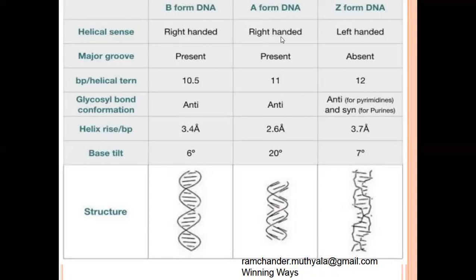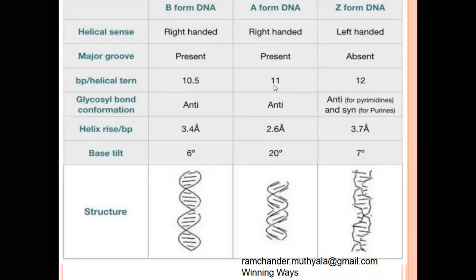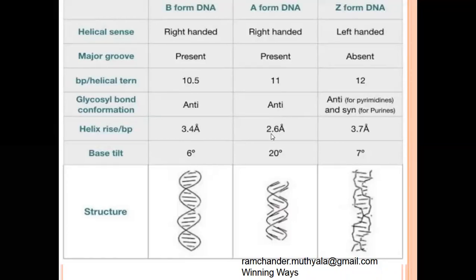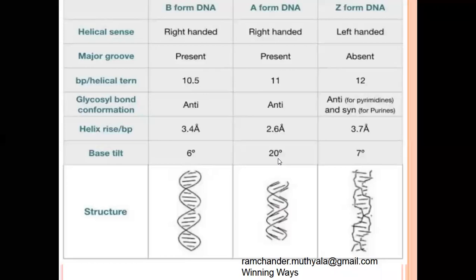A-DNA also shows a right-handed helical structure and major grooves are present. In these major grooves, 10 nitrogenous base pairs are present. The glycosyl bond conformation is in anti-parallel position, and between the two nitrogenous base pairs, 2.6 angstroms of width is present, with a base tilt of 20 degrees.